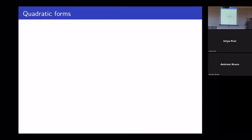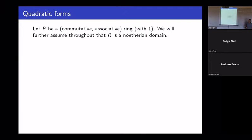I'll start by recalling some basic facts about quadratic forms and setting up some notation. For me, R is commutative, associative, and with unity, and we will assume that R is an integral domain. All my applications will be when R is a Dedekind domain, so cohomological dimension is low — nothing very interesting happening, at least for you, but for me it's very interesting. And all my examples will be over Z.